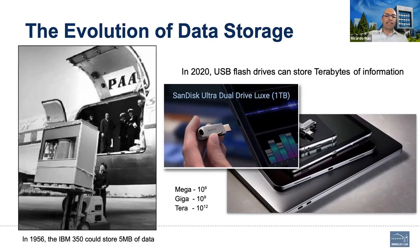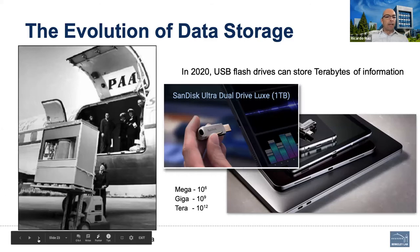A megabyte is 10 to the power of 6 bytes — so a million bytes. A gigabyte would be a billion bytes and a terabyte would be a trillion bytes — kind of a whopping number.